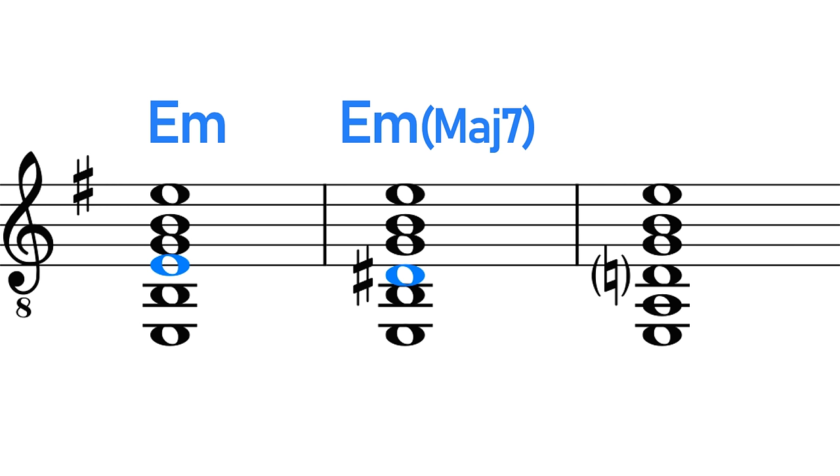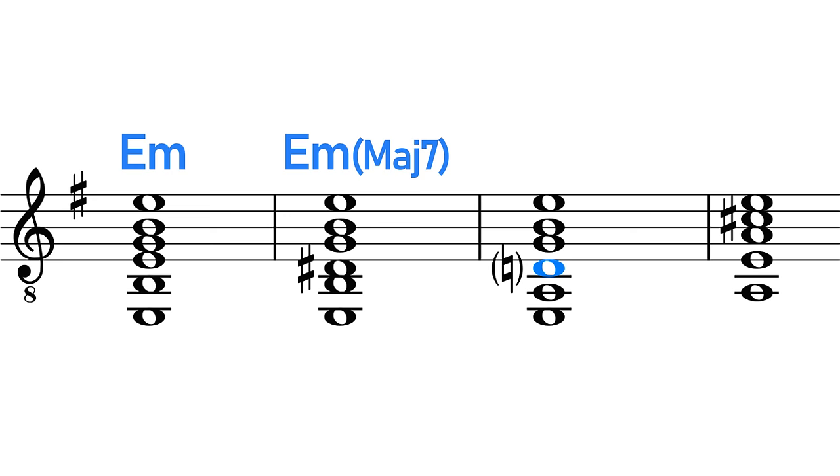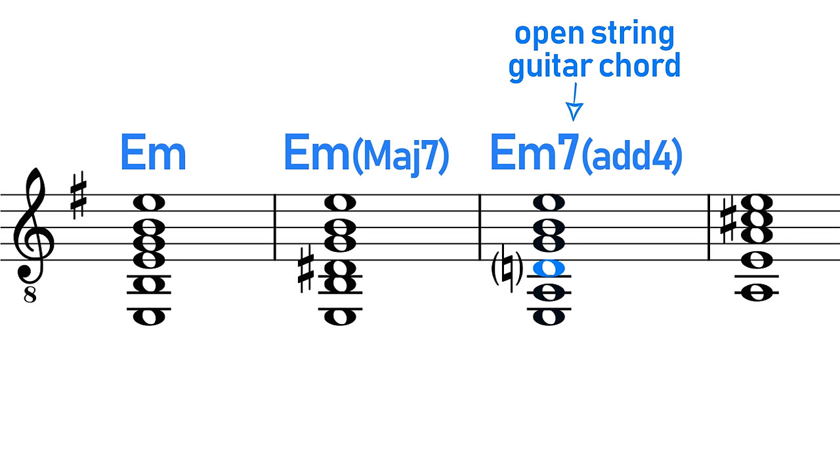E moves down to D sharp, and to continue the line we need it to now move to D natural. And this is how we get our open string guitar chord to fit into this progression, because our open string chord has this D natural here.